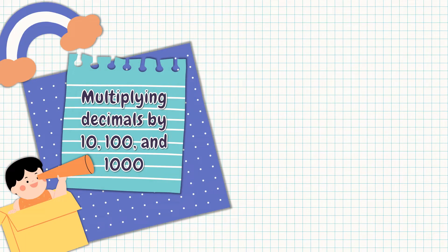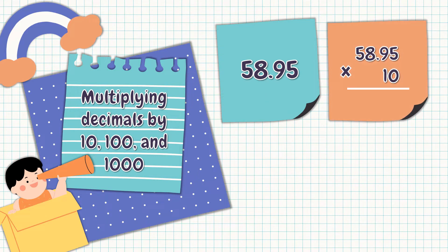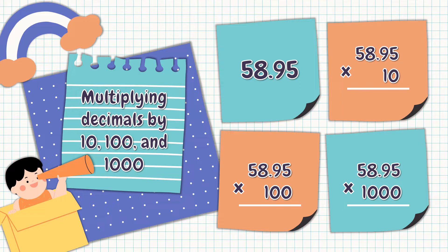In the first episode of Fun Math Class, we talked about multiplying decimals up to two decimal places. This time, let's talk about multiplying decimals by 10, 100, and 1,000. For example, we have 58 and 95 hundredths. We will multiply this number by 10, by 100, and by 1,000. Let's go!